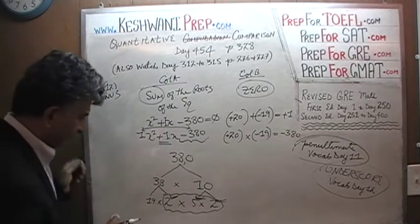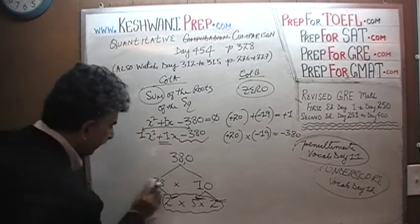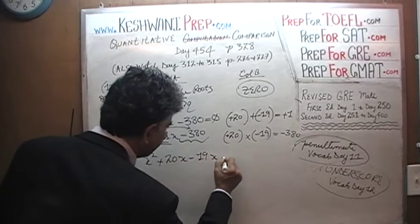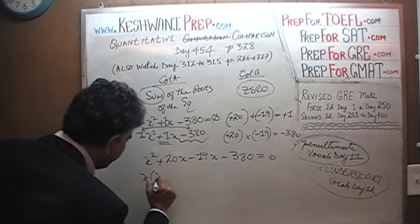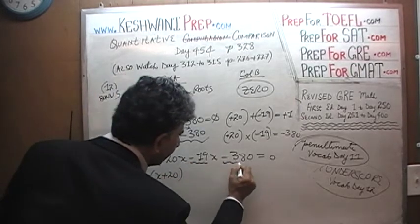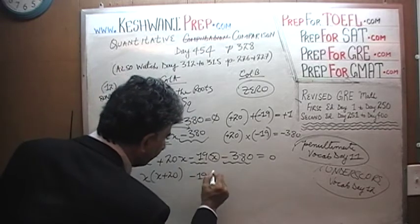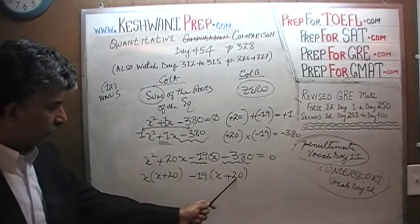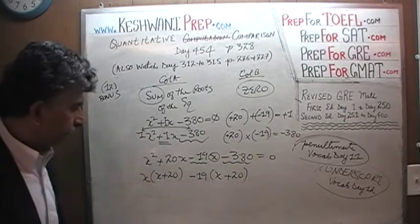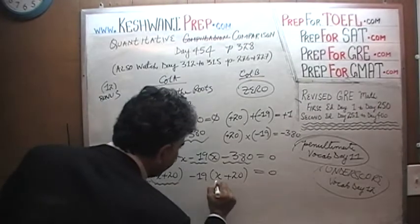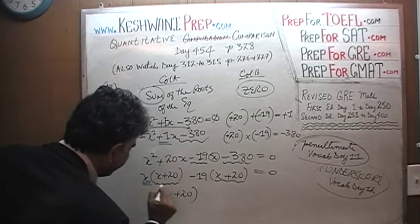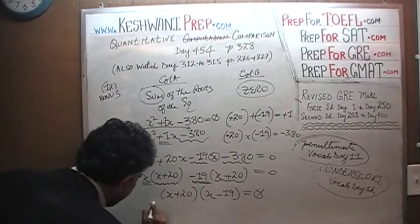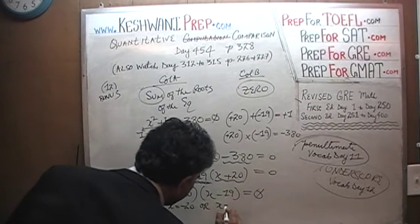We break up 1x as 20x minus 19x. So: x squared plus 20x minus 19x minus 380 equals zero. Take out x common from the first two terms: x times (x plus 20). Take out negative 19 from the last two terms: negative 19 times (x plus 20). The common factor is (x plus 20), giving (x plus 20)(x minus 19) equals zero.